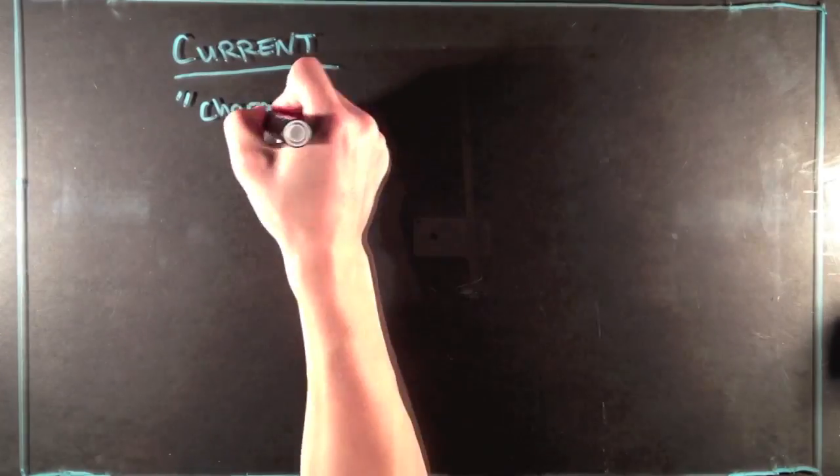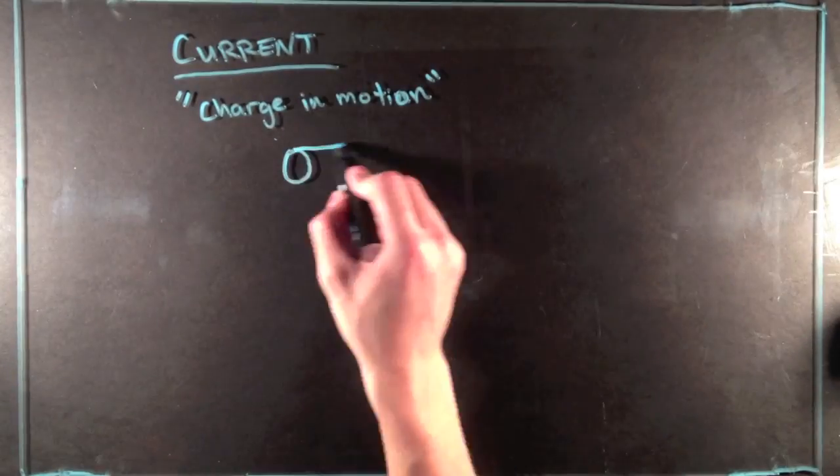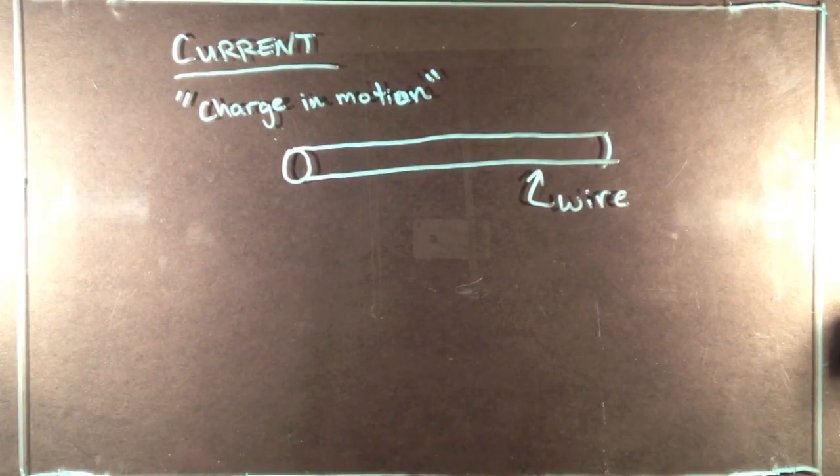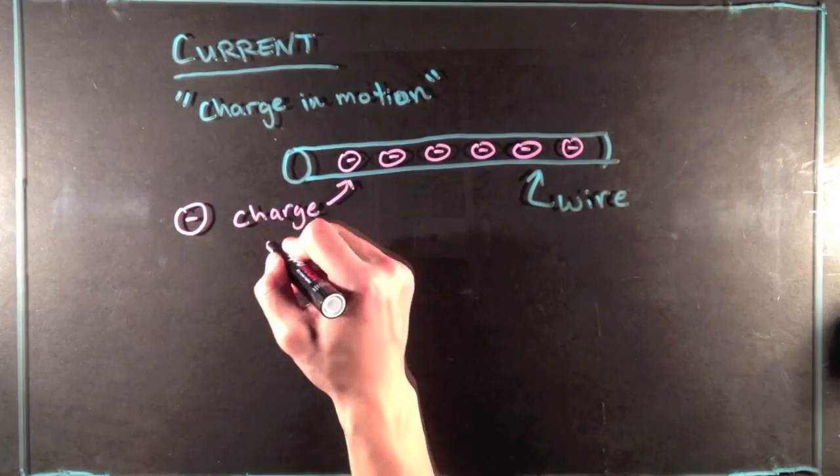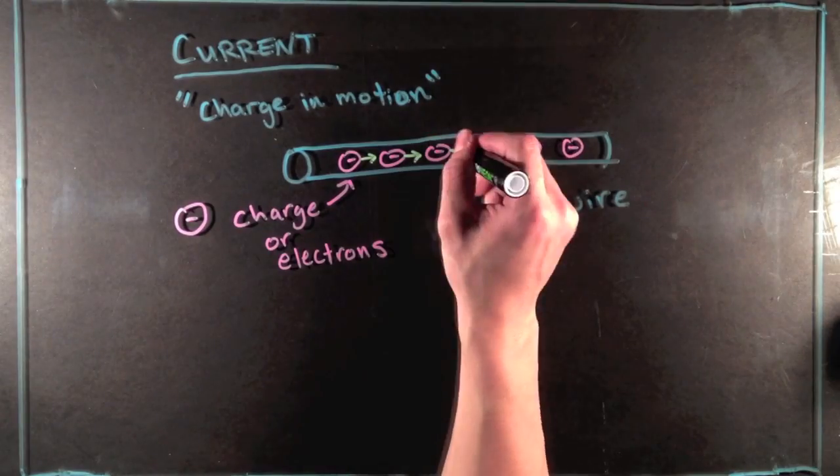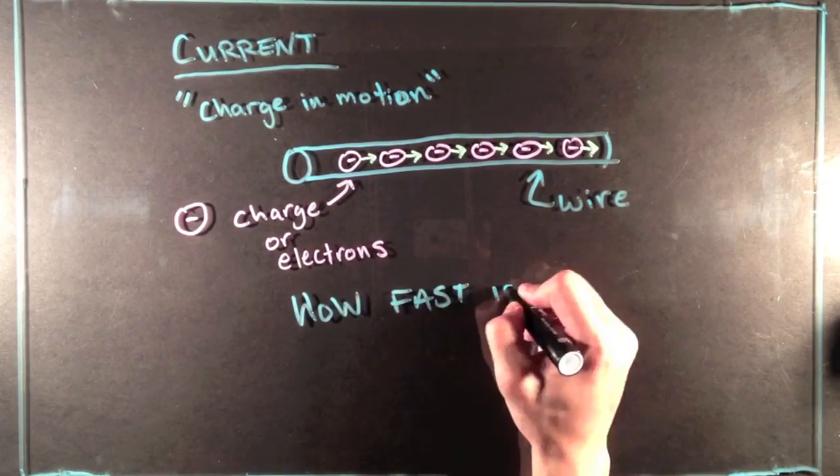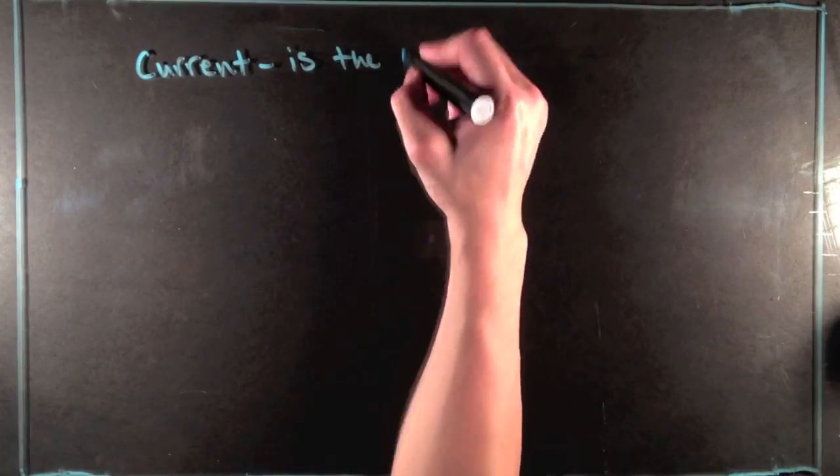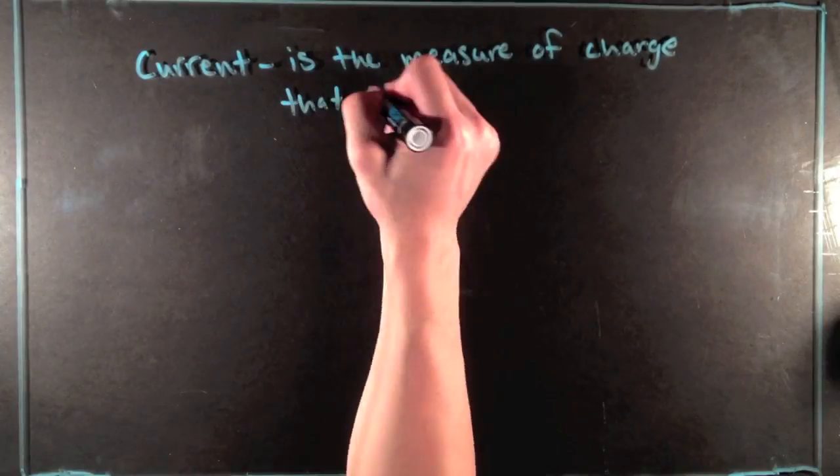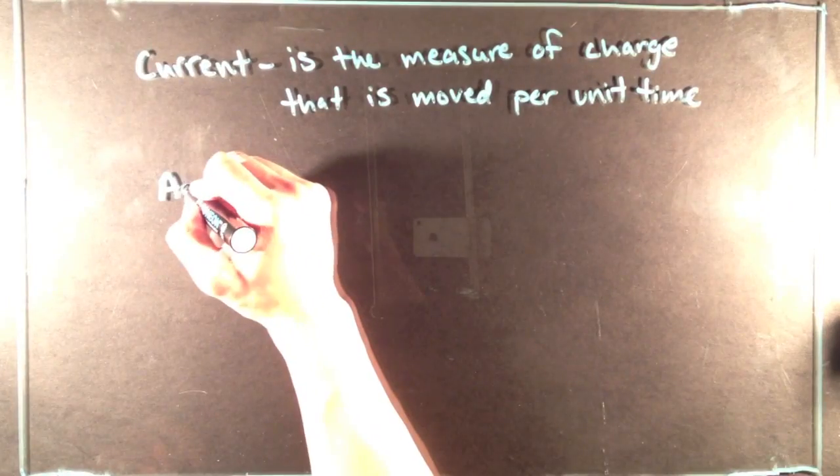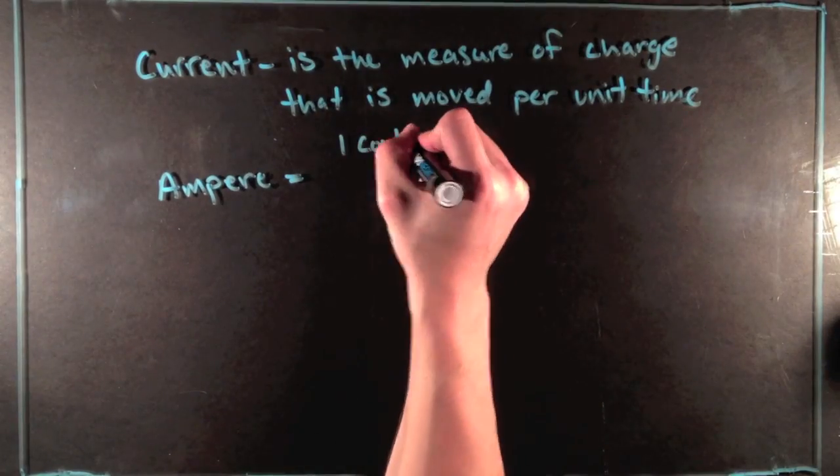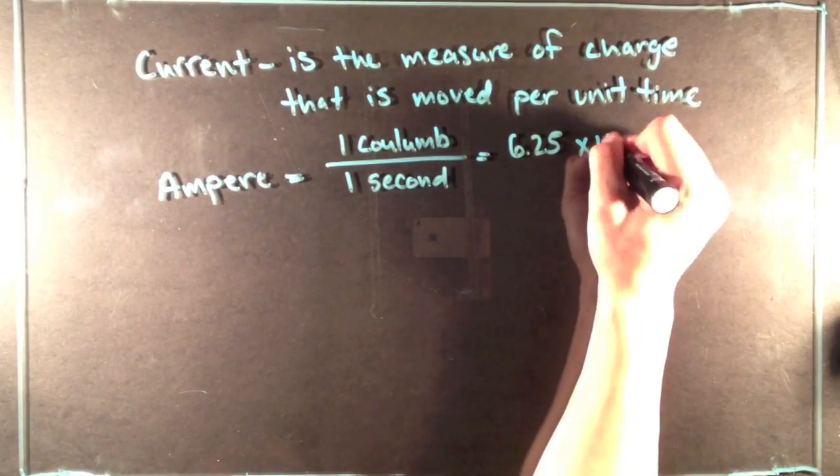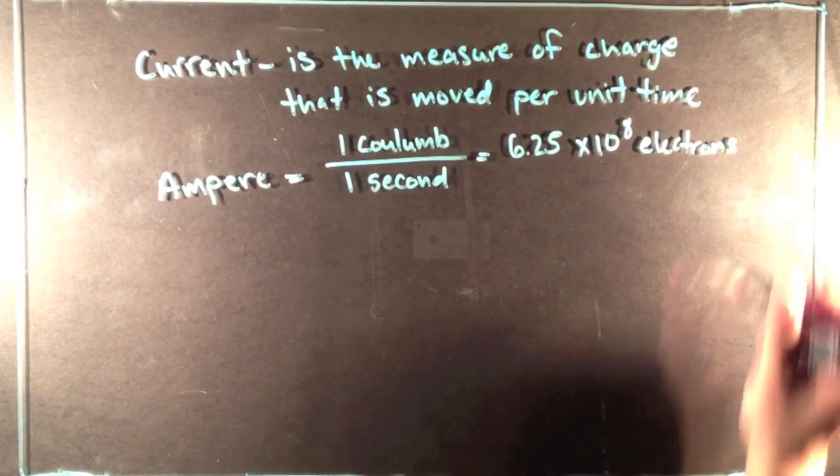Okay, so we're going to start the video off by talking about current. Now, when we think about current, we can think of it as charge in motion. If we were to take a look at a wire and see the charges inside of it, well, if the charges were moving in a certain direction, just how fast are those charges moving? So, the definition of current is just the measurement of charge that is moved per unit time. This measurement is known as an ampere, which is equal to one coulomb per one second, or 6.25 times 10 to the 8 electrons per second.